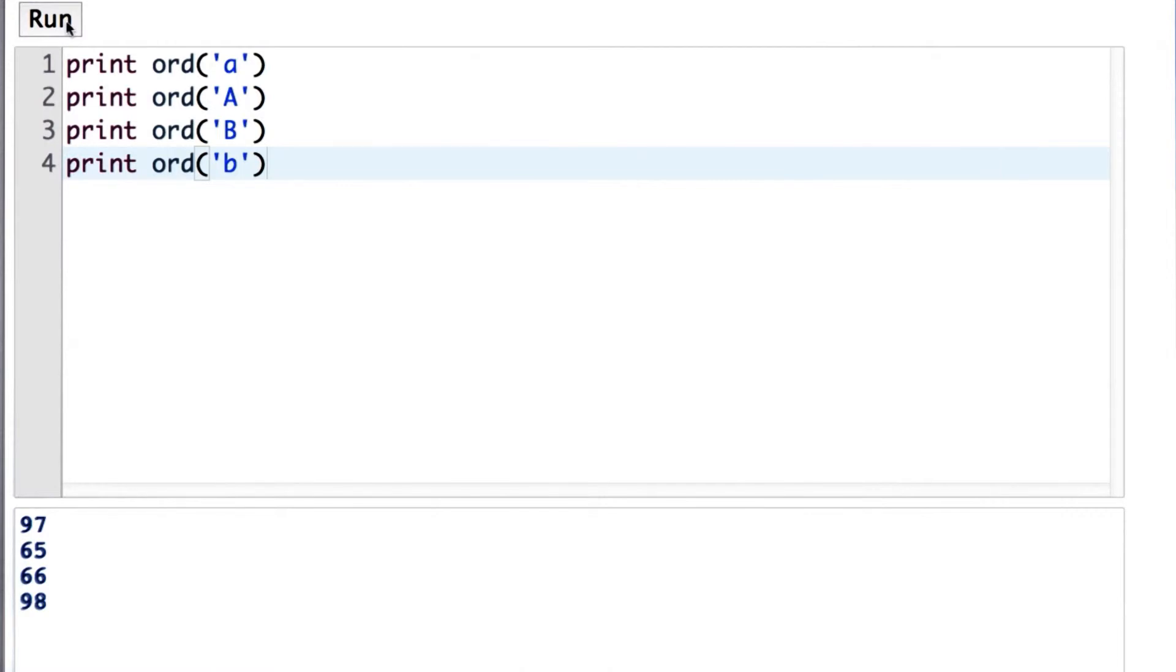And these are the numbers based on the ASCII character encoding. What the actual numbers are are not very important for us, other than that we get different numbers for different letters. So we'll be able to use the results of ord to make different strings hashed to different values.